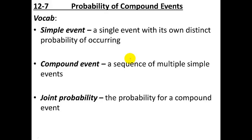There are a couple different ways of looking at things. First is a simple event, which is just one thing happening with a certain probability. A single event just means one thing is happening and has a certain probability of occurring. This could be like the percent chance that it's sunny today or the probability that you roll a dice and get a five.